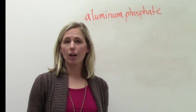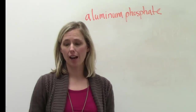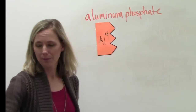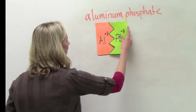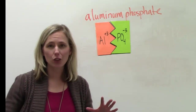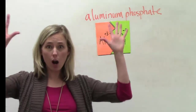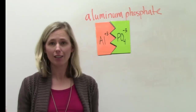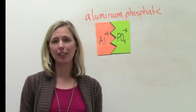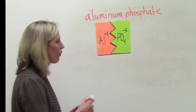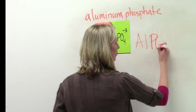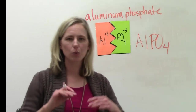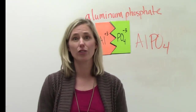For aluminum phosphate, aluminum has a positive three and phosphate has a negative three. This is one of those situations where you only need one of each — positive three, negative three cancel out to equal zero. This is a nice formula to write: one aluminum, one phosphate. No subscripts needed, no parentheses needed. This one's nice and easy.